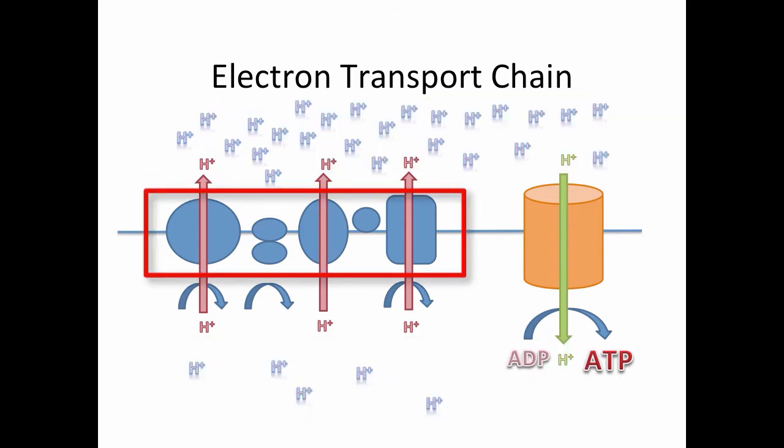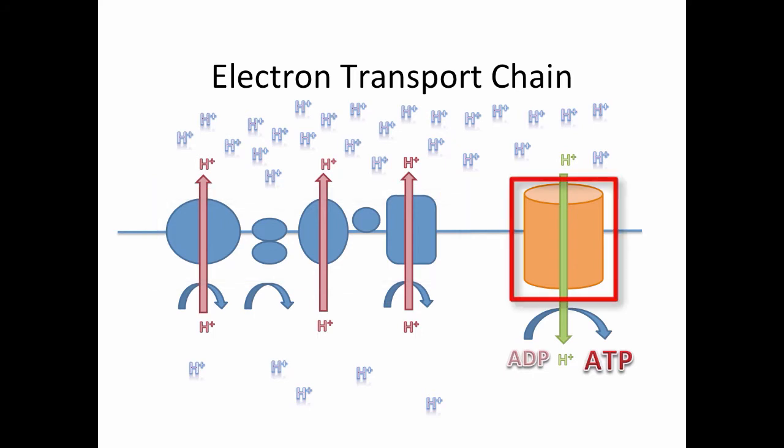The group of blue shapes represent the proteins along this membrane that transport the hydrogen protons into the intermembrane space. The orange cylinder represents the ATP synthase protein that is responsible for making the large amounts of ATP that we've been talking about in previous videos.